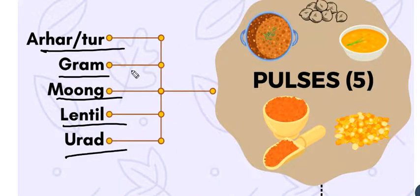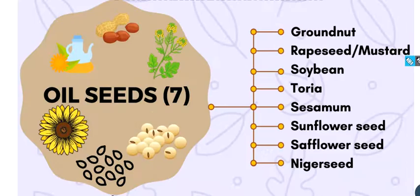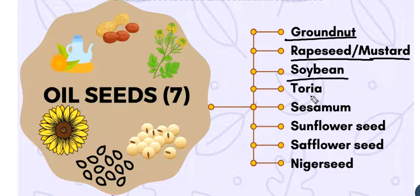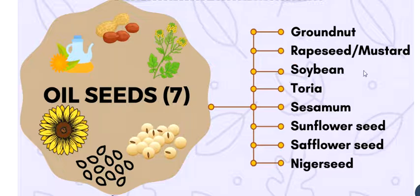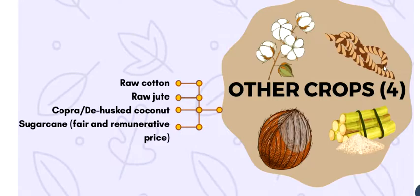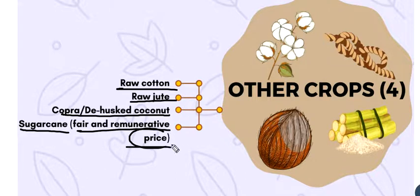And 7 oilseeds: Groundnut, Rapeseed/Mustard, Soyabean, Toria, Sesamum, Sunflower seed, and Niger seed. In other crops there are 4 commercial crops: Raw Cotton, Raw Jute, Copra/Coconut. For Sugarcane, it is FRP — Fair and Remunerative Price — instead of MSP.